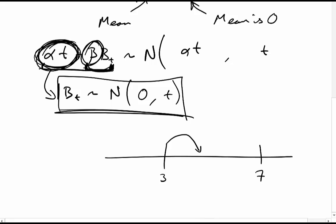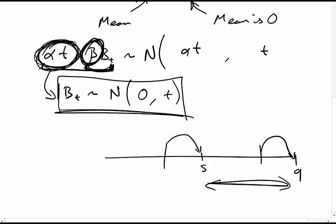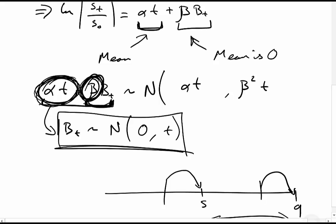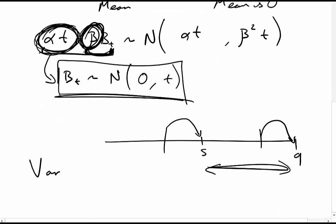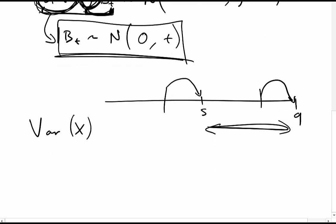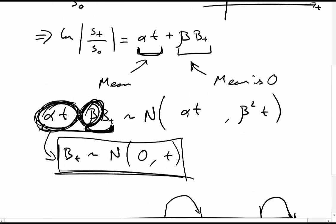Multiplying by beta is going to make a huge difference because it's going to affect the variance. But it won't affect it by beta — it's going to be affected by beta squared. Because if you multiply a random variable by a constant and find the variance, it becomes that constant squared times the original variance. So if variance of X equals A, then variance of k times X equals k squared times A.